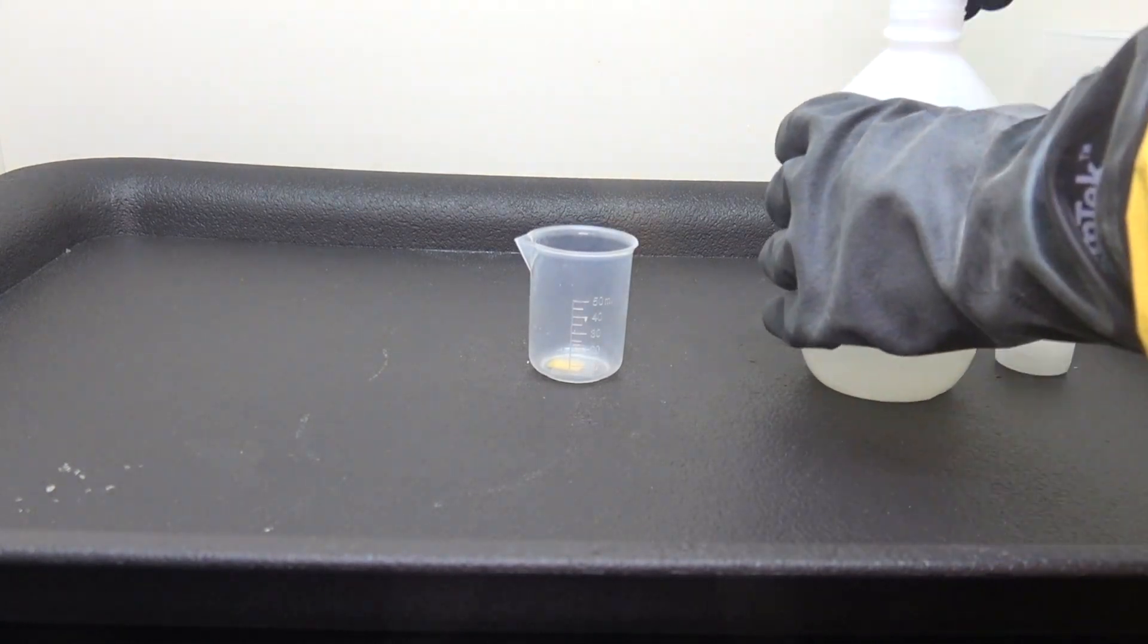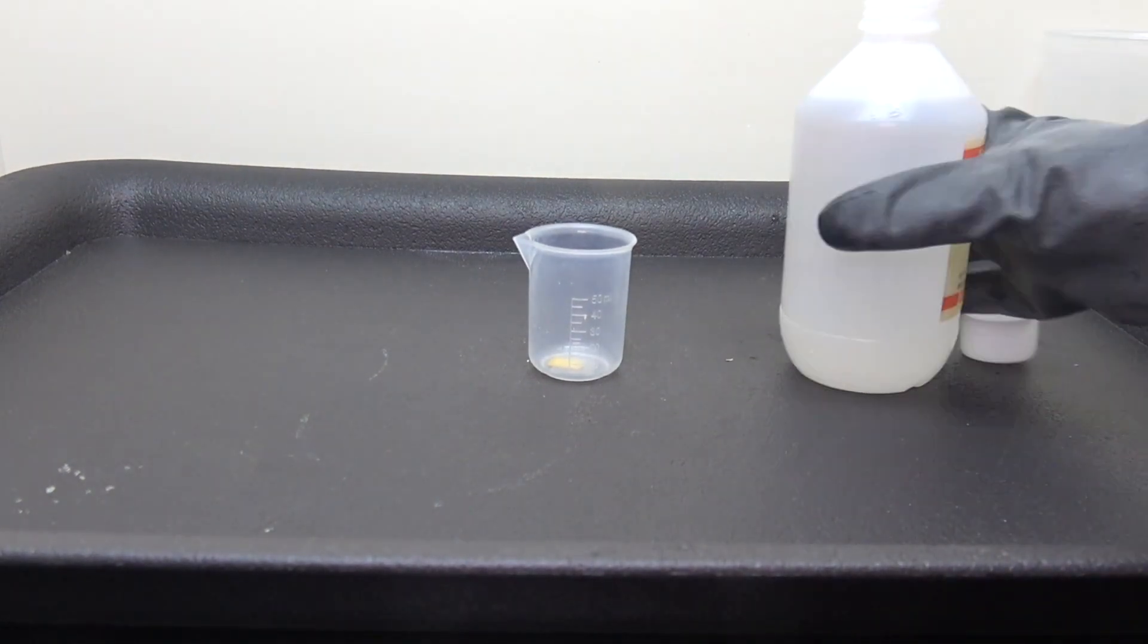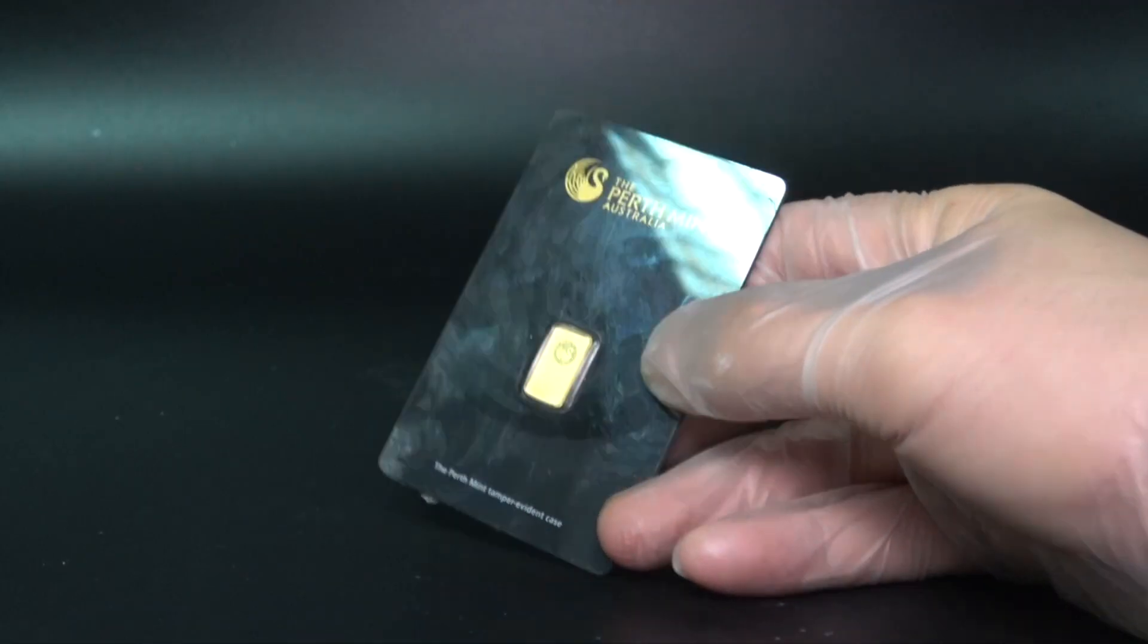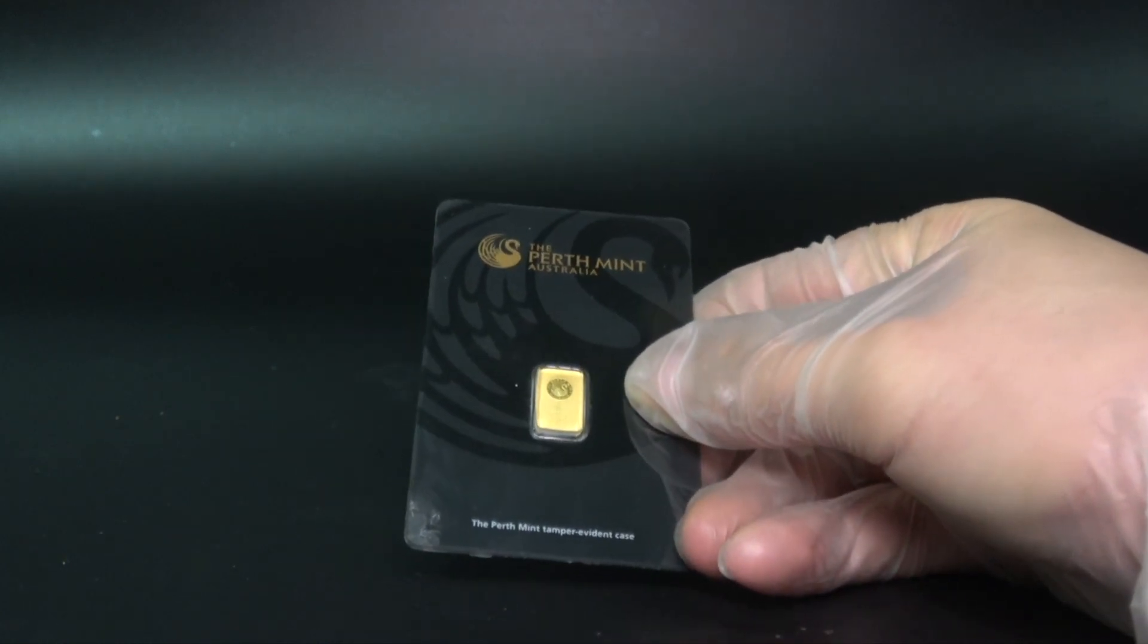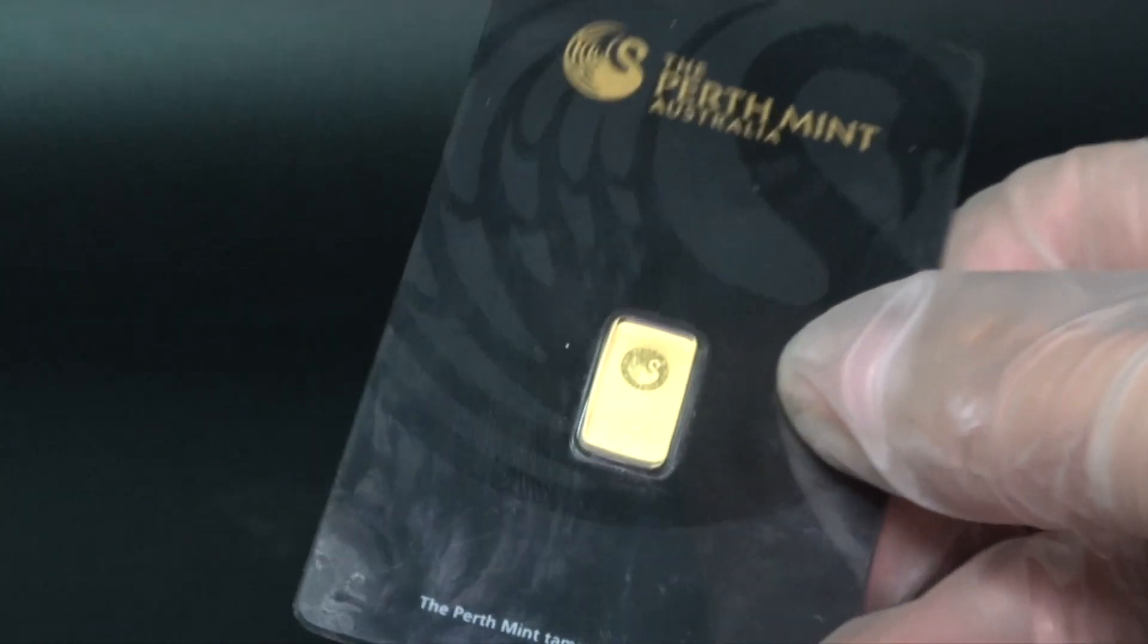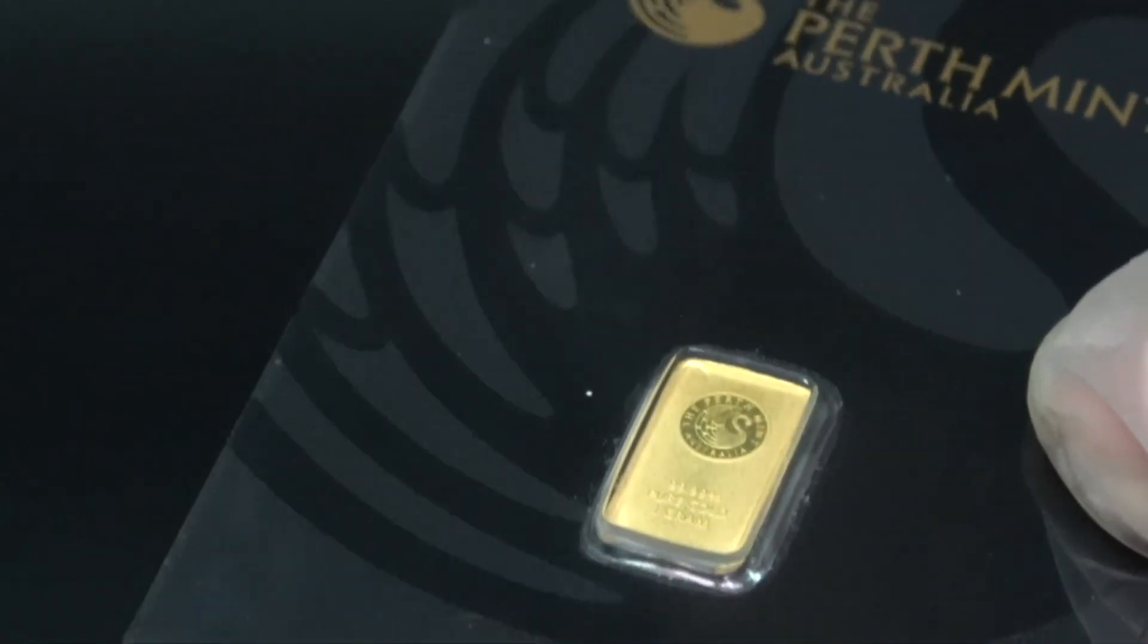Well, there is only one way to find out. Here I have a gold bar from Australian Perth Mint. It's 99% pure and has a minimum mass of 1 gram or 0.0315 troy ounce for people who still use the imperial system.